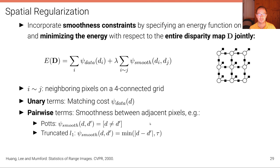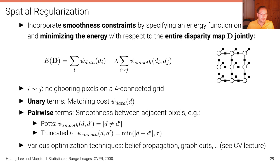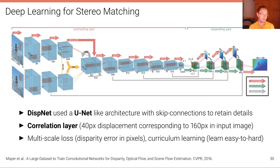To solve this energy minimization problem, techniques such as belief propagation or graph cuts can be used. Alternatively, the stereo matching problem can be learned end-to-end from data using deep learning, which requires large amounts of training data but now leads the competition leaderboards.